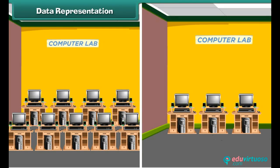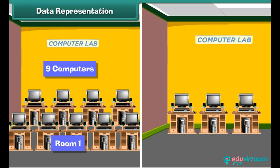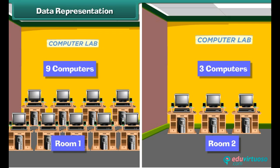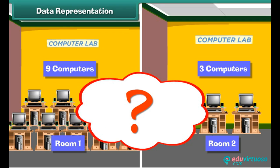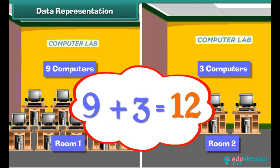Look at the diagram that shows the arrangement of computers in your computer school. Look at the plan and then answer the questions that follow. How many computers are there in room 1? There are 9 computers in room 1. How many computers are there in room 2? There are 3 computers in room 2. How many total computers are present in school? There are 12 computers in total.